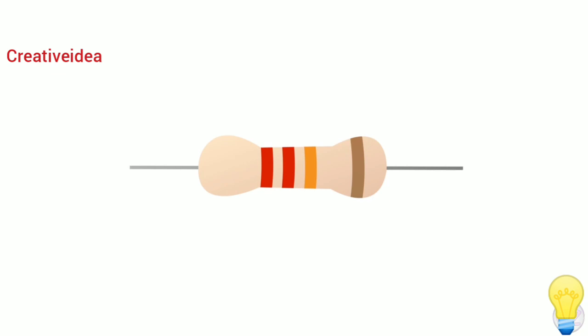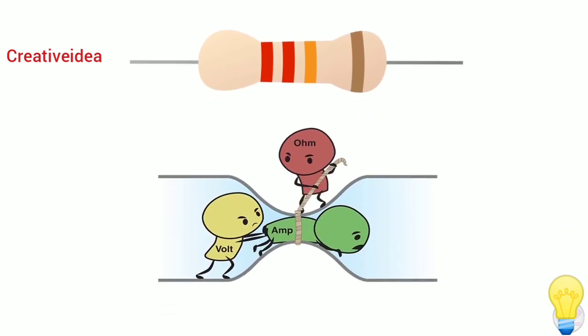It can also divide voltage. Look at this funny image. This image says everything about the working principle of a resistor. Voltage pushing electrons, but resistor is trying to block the electrons. In this way, resistors reduce current flow.